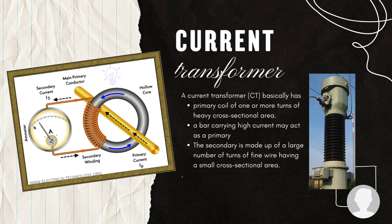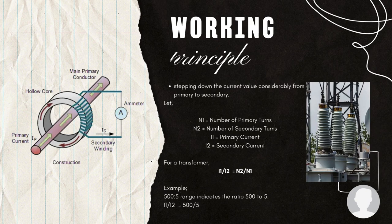A CT basically has a primary coil of one or more turns of heavy cross-sectional area. The bus bar carrying high current may act as a primary. This is connected in series with the line carrying high current. The secondary of the current transformer is made up of a large number of turns of fine wire having a small cross-sectional area, usually rated at 5 amperes. This is connected to the coil of normal range meters. These transformers are basically step-up transformers in terms of voltage, and thus the current is reduced from primary to secondary — making them step-down transformers from the current point of view.